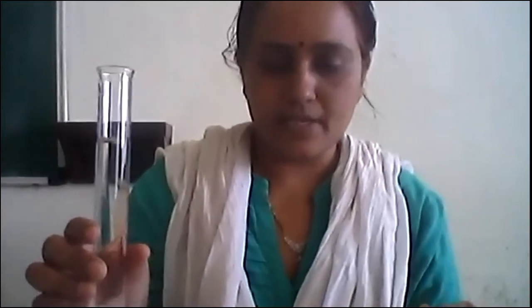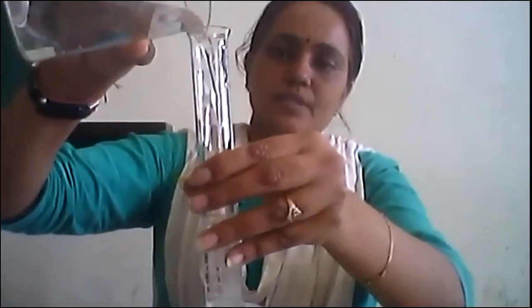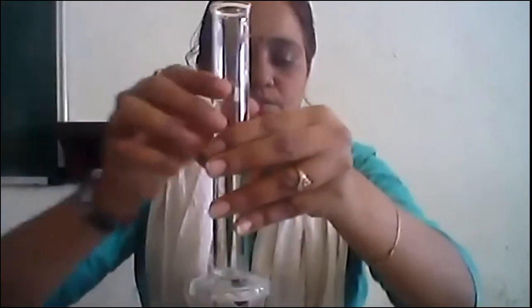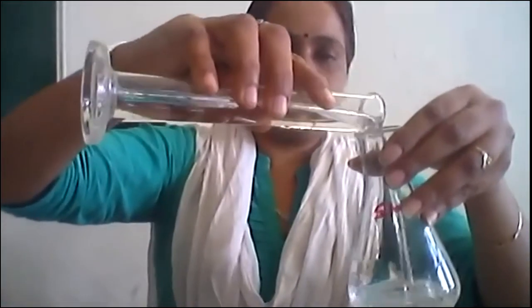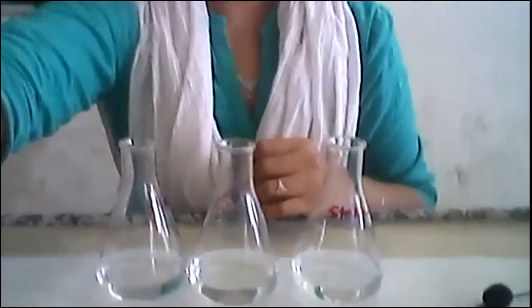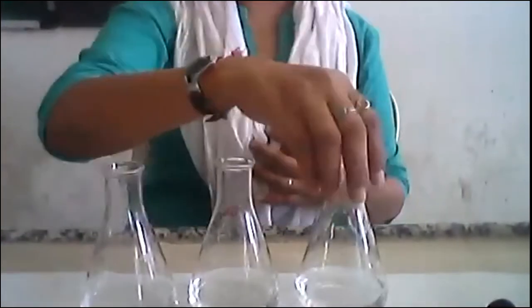This is 50 ml sodium sulphite I am going to add into each flask. Since we are taking the sample from the same initial condition, you can measure the zero-minute reading from any of these three flasks — the reading will be the same for all. So I will take the zero-minute reading from the static flask.